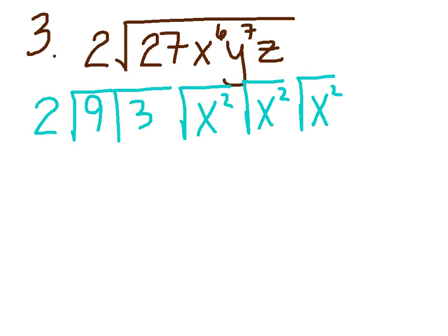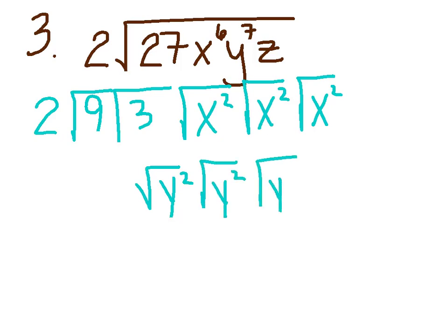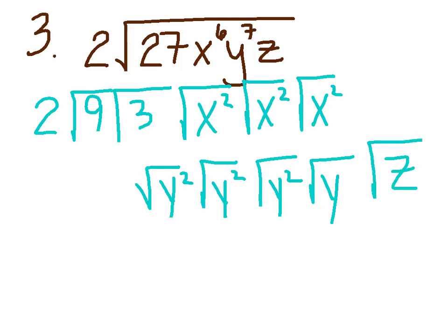I need y to the 7th, so I'm breaking them into 2's. That's a y squared, a y squared — so a total of 4 — another y squared, so that's 2, 4, 6, and I need one more to get me to 7. So I'm going to leave that one in the radical. And lastly, I have just one little z, and I'm going to leave that in the radical too.